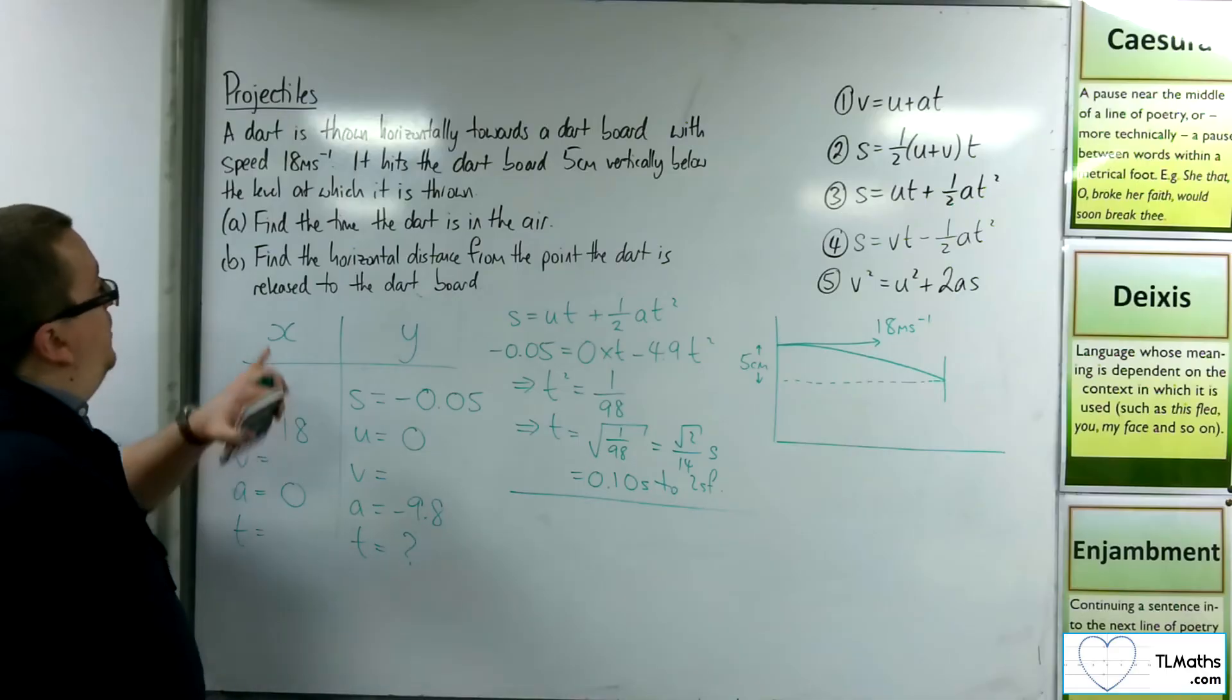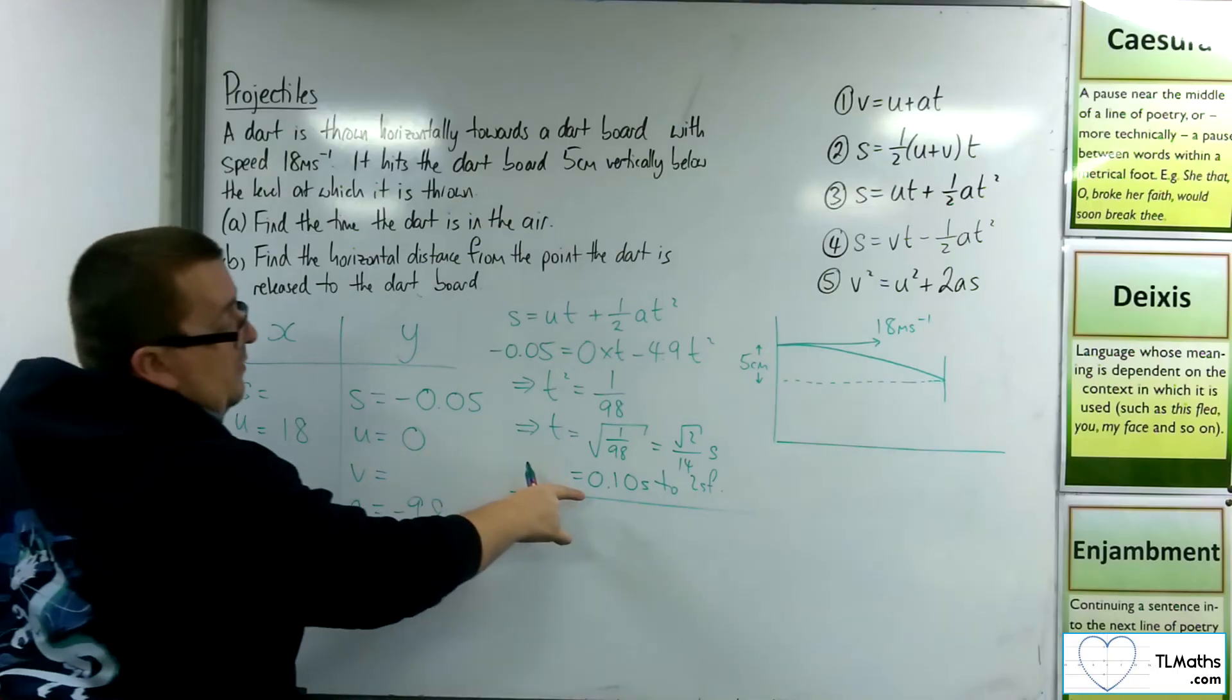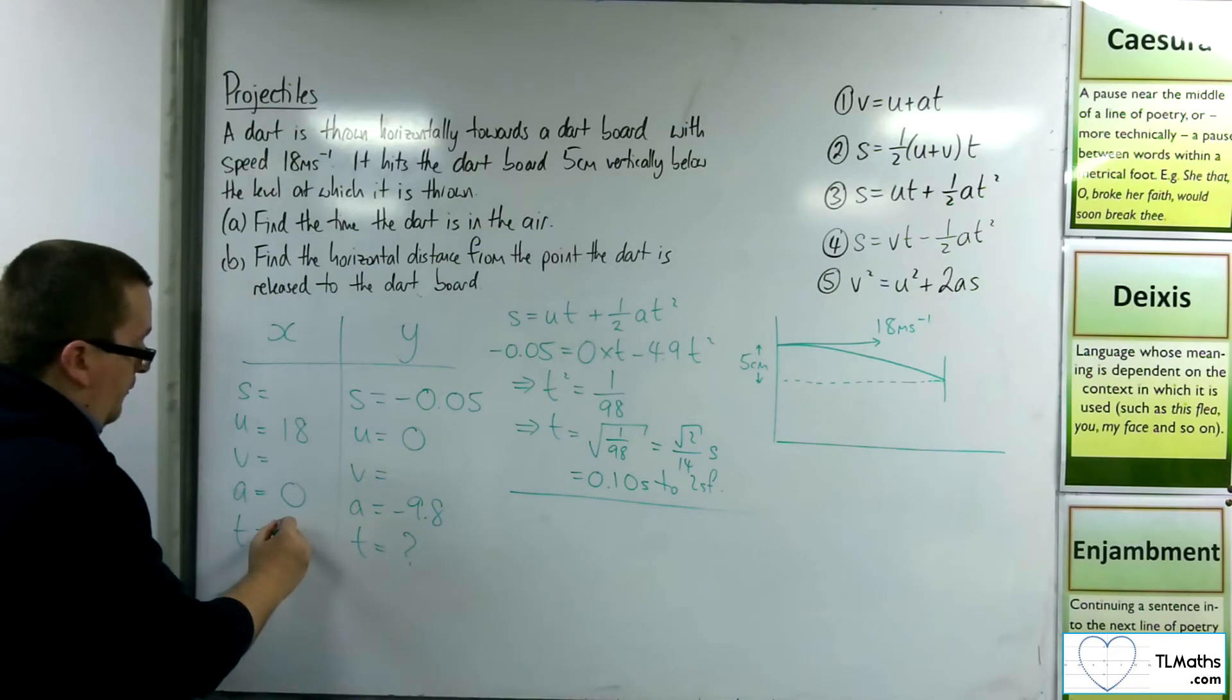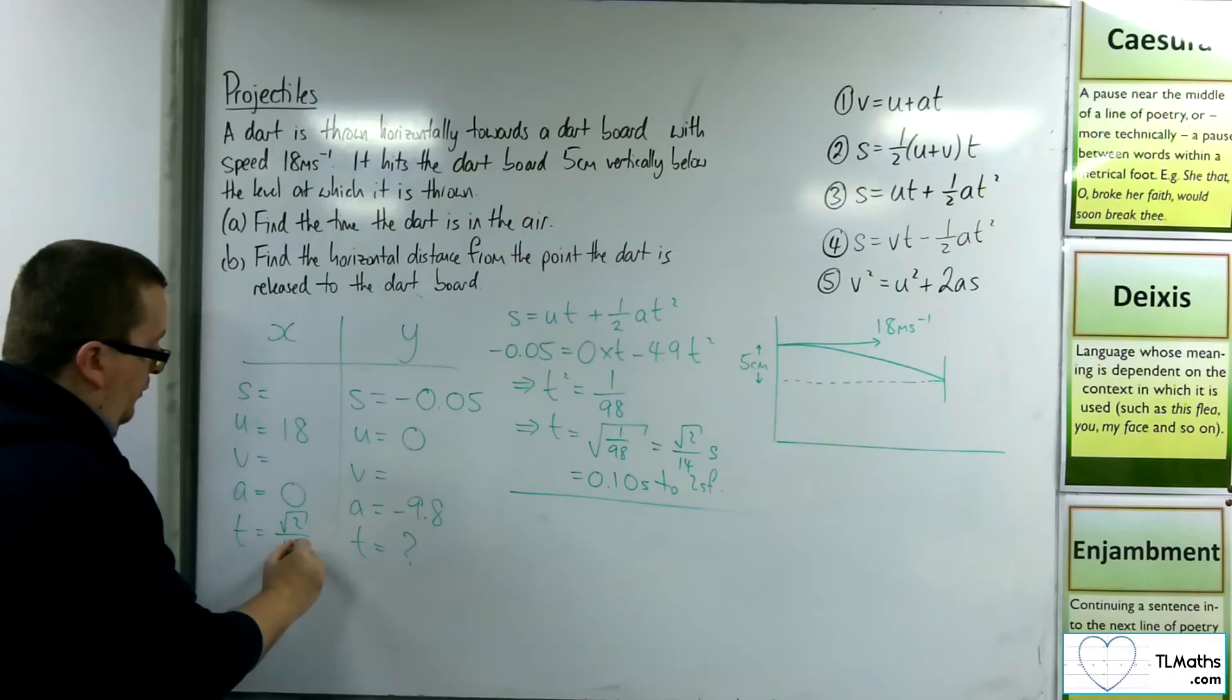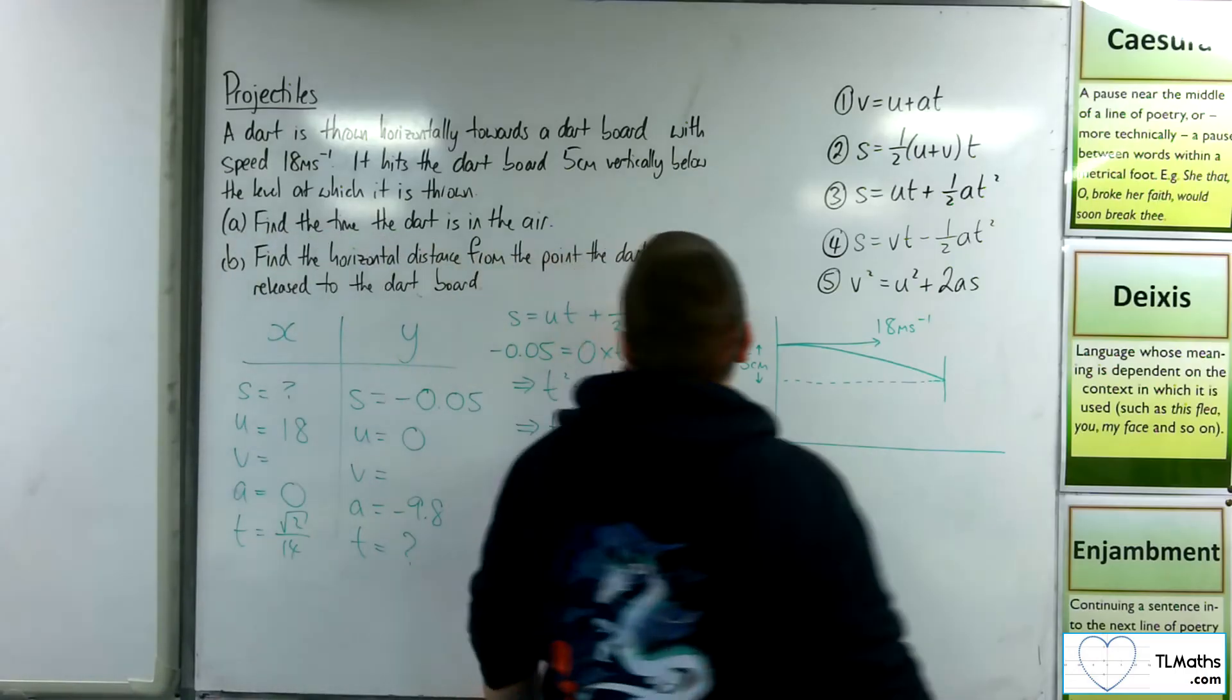Now, as for part B, find the horizontal distance from the point the dart is released to the dartboard. Well, I know how long the dart is in the air. The dart is in the air for root 2 over 14 seconds. And I need to find that horizontal distance that it covers.